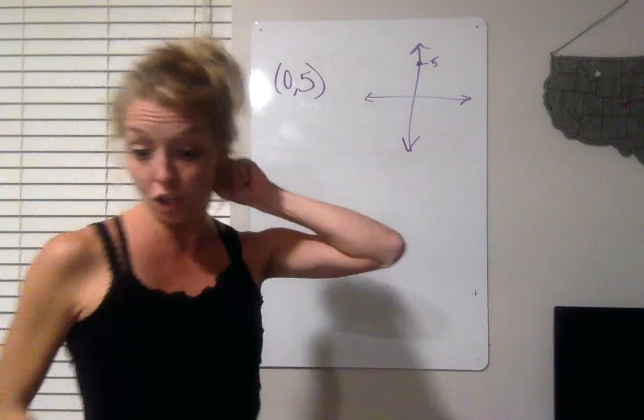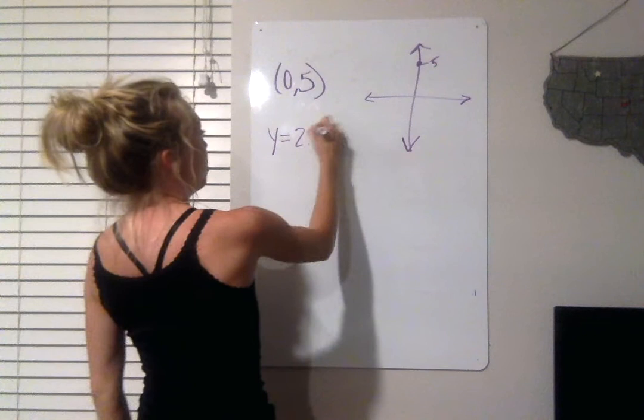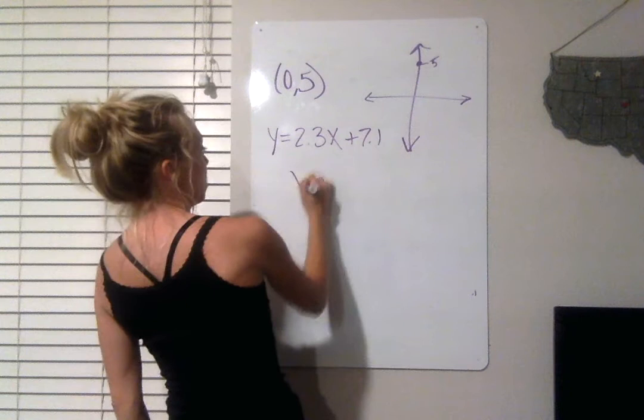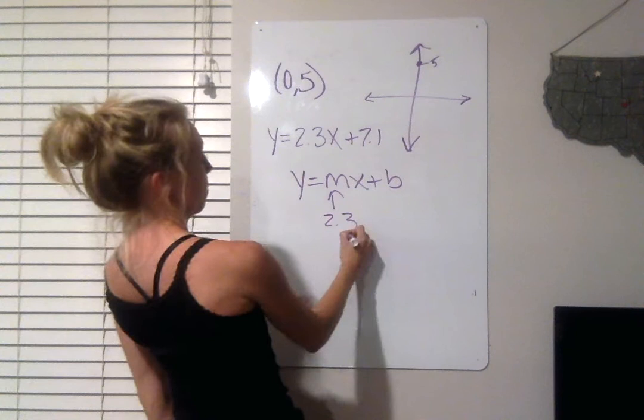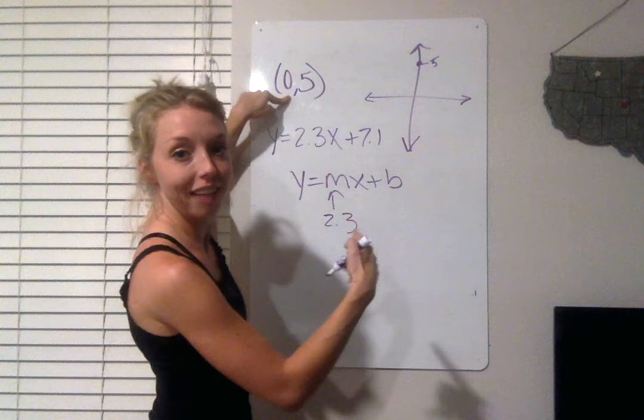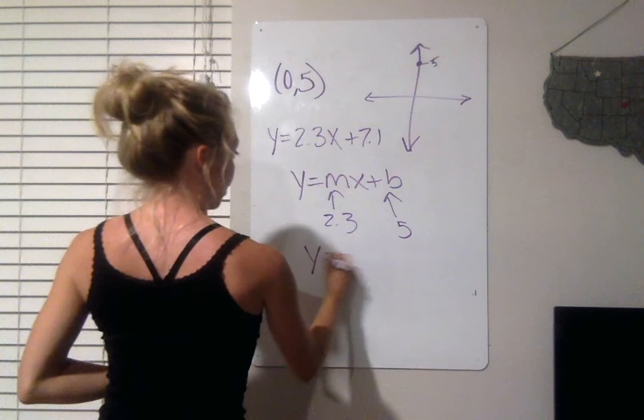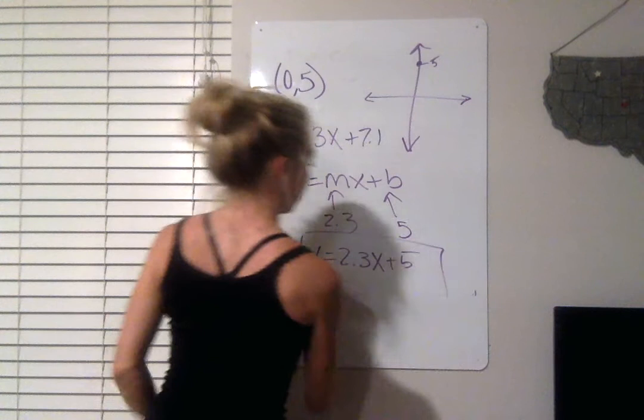So on number 9, it was supposed to be parallel to y equals 2.3x plus 7.1. So that means when I have my line, my slope is the same. Big brain. The Y intercept is 5. And that means when I finish this out, I get y equals 2.3x plus 5. Perfect.